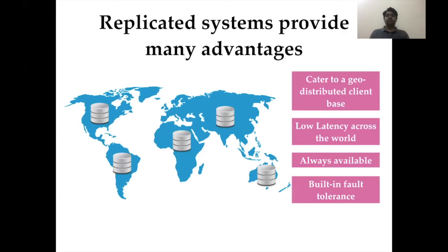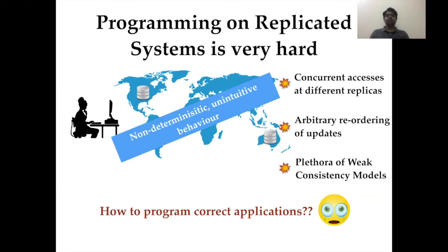In replicated systems, data is replicated or copied in multiple locations across the world. Replicated systems provide many advantages: they can cater to a geo-distributed client base, provide uniform latency, are always available, and have built-in fault tolerance. Unfortunately, programming on replicated systems is very hard. Because of various factors such as concurrent accesses, arbitrary reordering of updates, and a number of inconsistency models, we get non-deterministic and undesirable behavior.